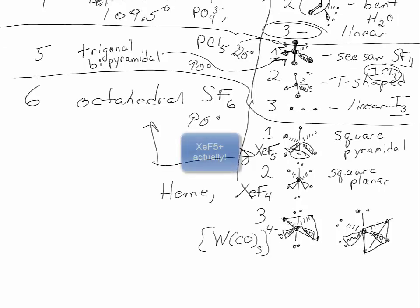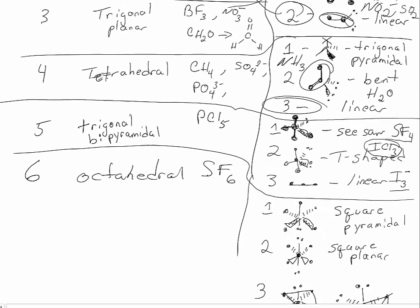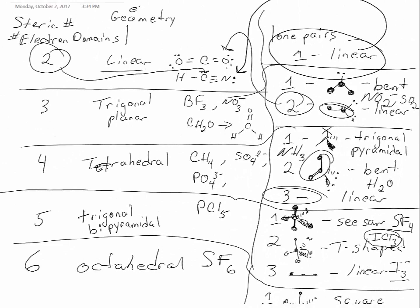Some examples of these for square planar could be XeF5-, XeF4, or even the heme group from hemoglobin. For the three lone pairs, you could have a tungsten triscarbonyl anion. We're not going to worry about these three lone pairs in this class or really anything above six for the steric number, although those do exist. You may want to go ahead and draw all of these Lewis structures so that you can see these shapes.